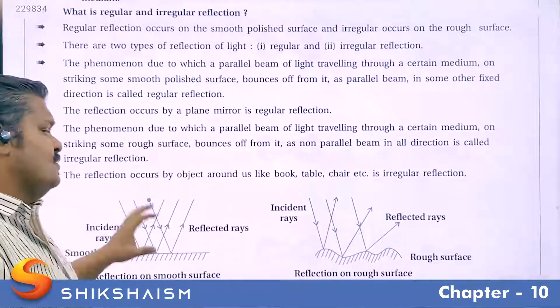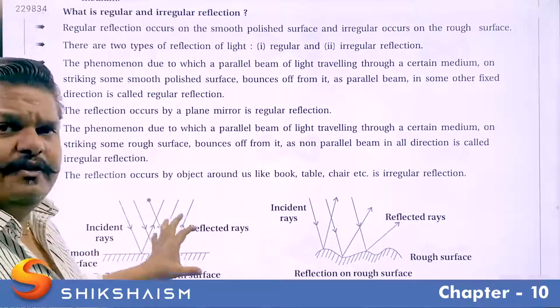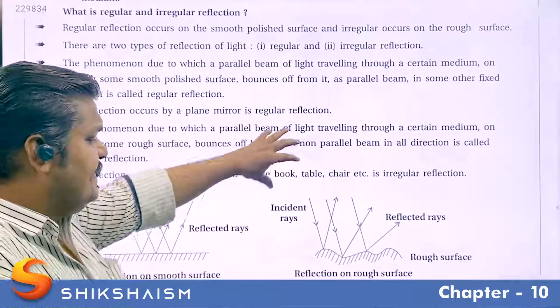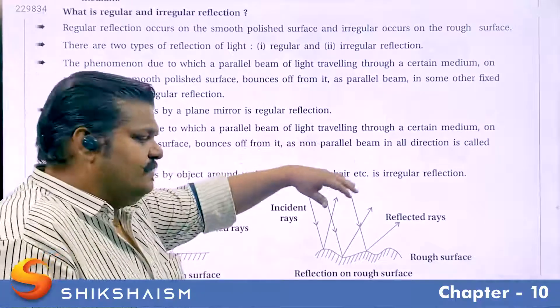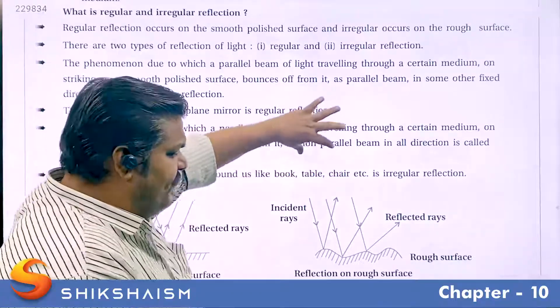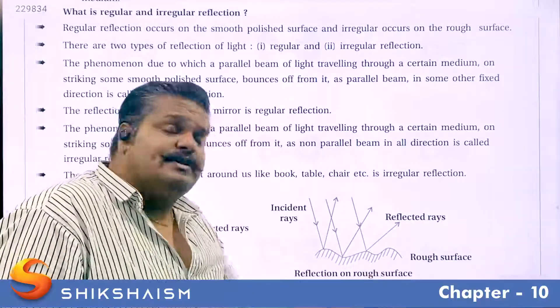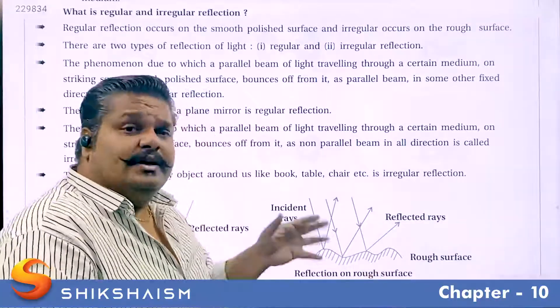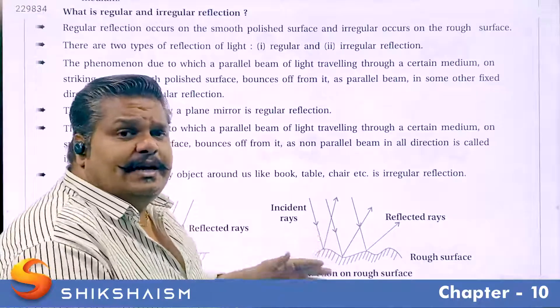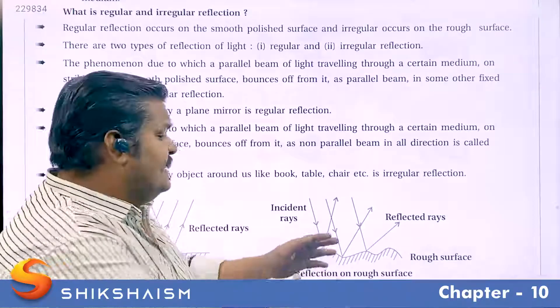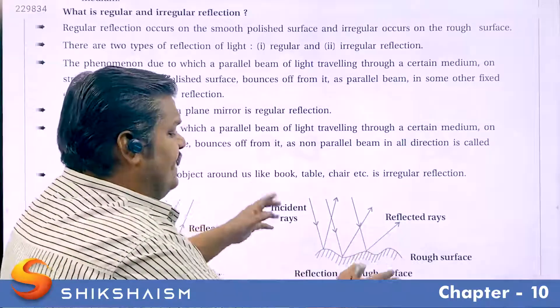This type of reflection is called regular reflection. While in irregular reflection, when a parallel beam of light is incident on a rough surface, the reflected rays are not parallel but are spread over a wide area.